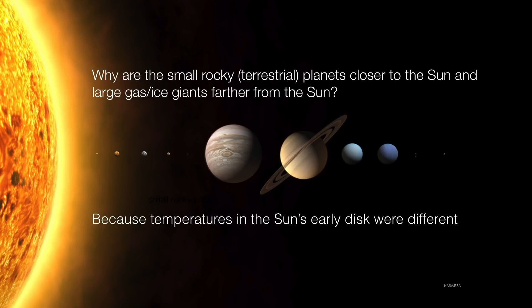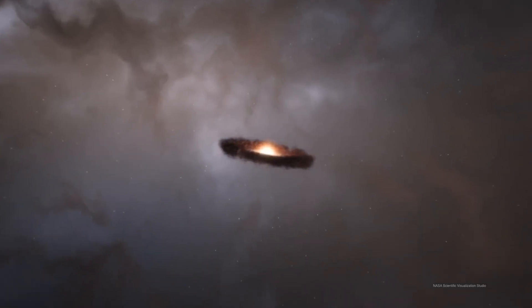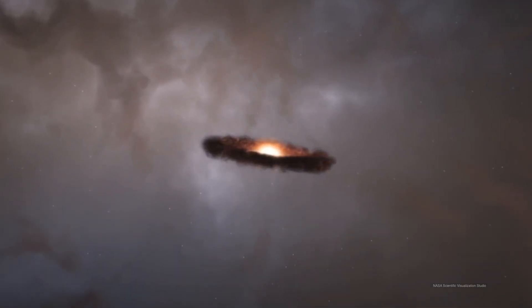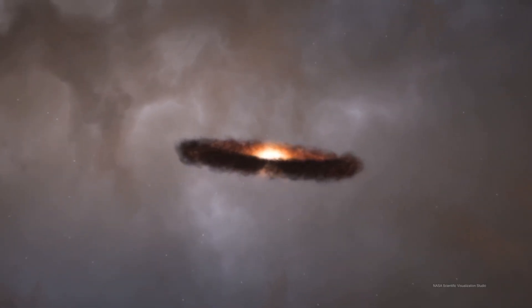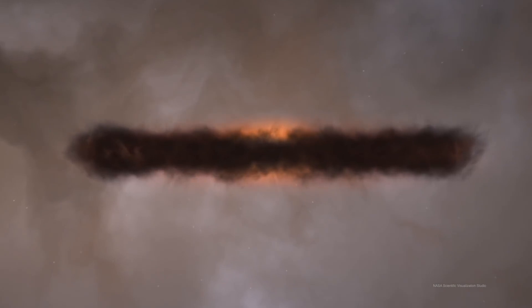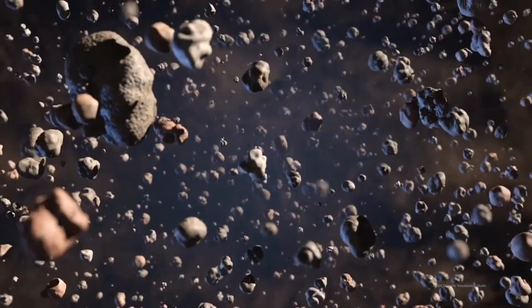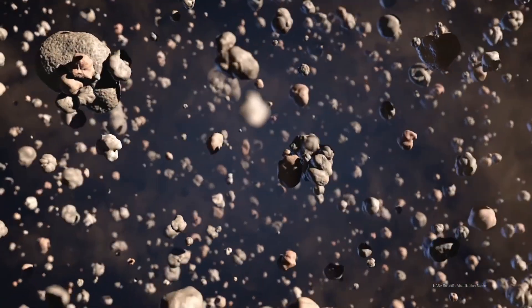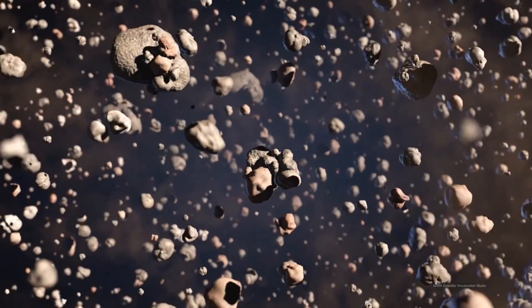How does a spinning disk of gas and dust go on to become planets? In order for us to think about that, we have to change our perspective. We have to go deep inside the circumstellar disk. Instead of thinking about the disk as a whole, we need to change our scale and get smaller and smaller until we are finally at the scale of individual grains of dust. These dust particles will go on to become planets.